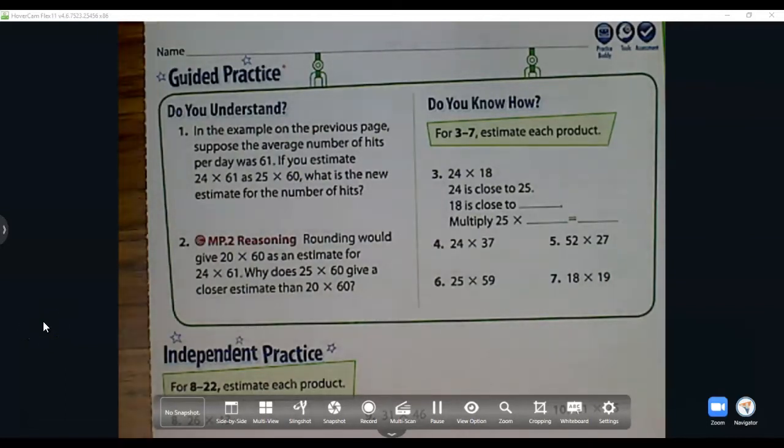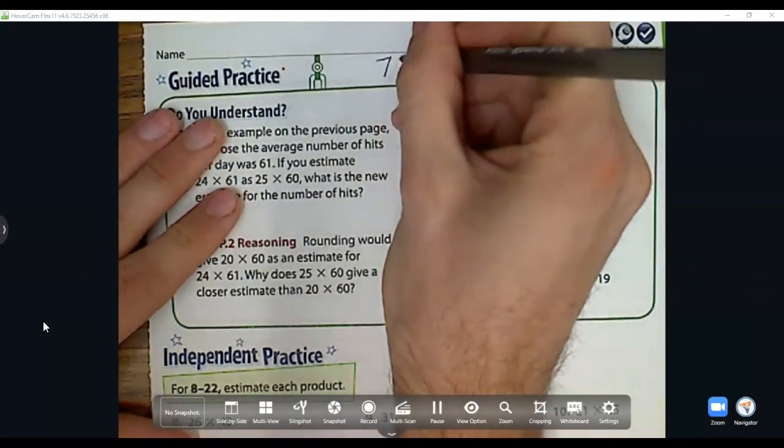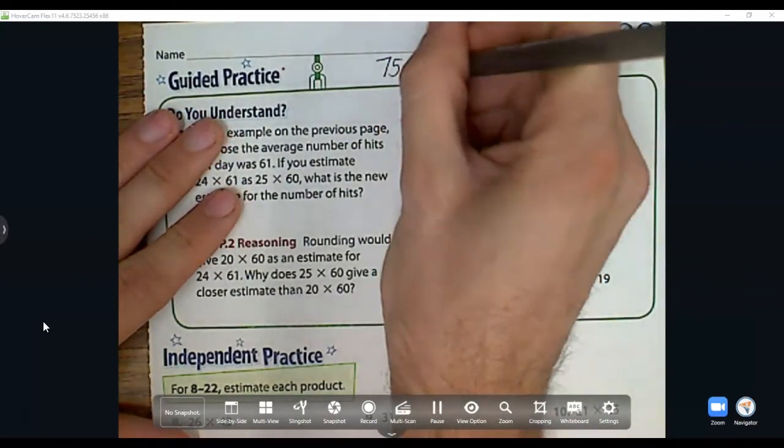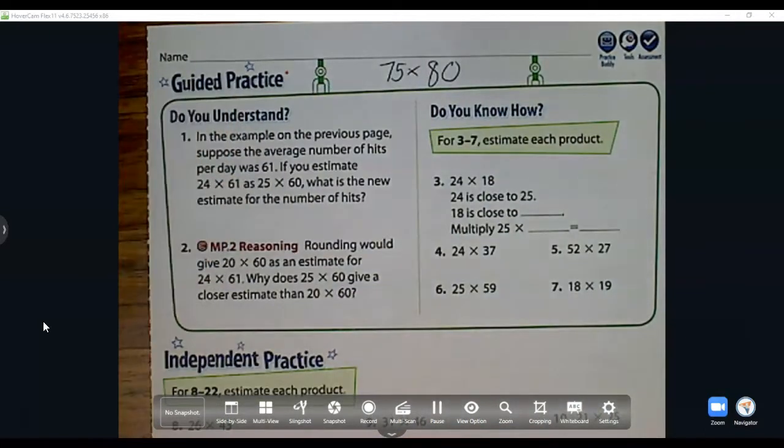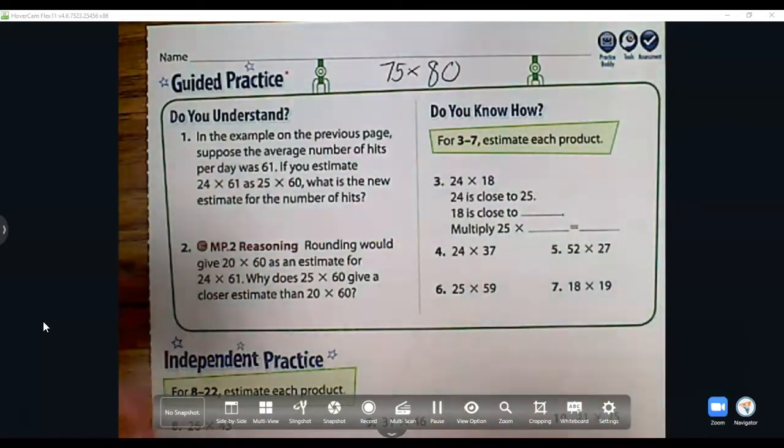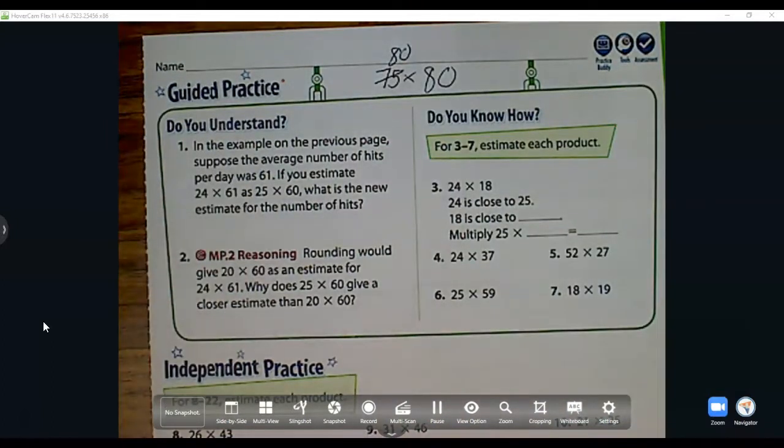All right guys, so here's our lesson for today and it's on using compatible numbers. Remember, compatible numbers are numbers that are easy to multiply in our head. So 75 times 80 would not really be a compatible number because I can't multiply that in my head very well. A compatible number might be more like 80 times 80, then my basic math fact is 8 times 8. So remember what a compatible number is.